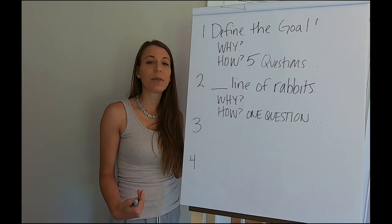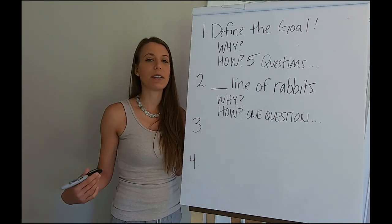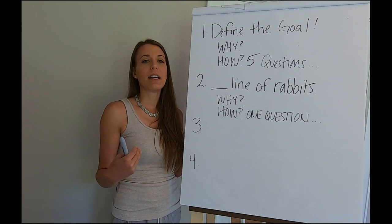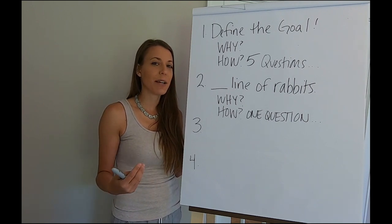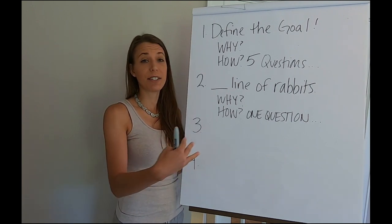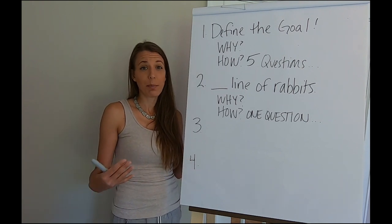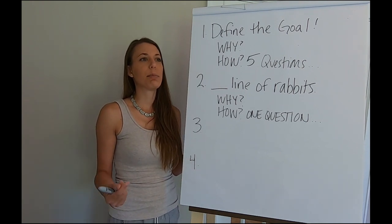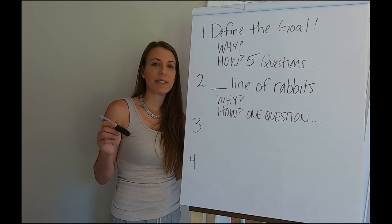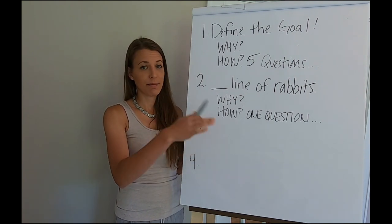An example might be if you're breeding German Angora rabbits and you're struggling with the length of the rabbit. To adhere to the German Angora rabbit standard you have to have a certain length of your rabbit, a certain body type. And so the problem might be my rabbits are too short as an example.